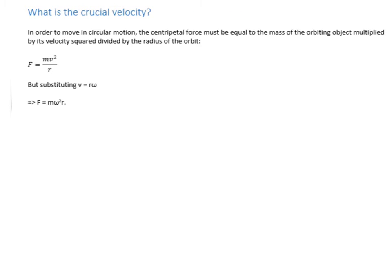The required speed is calculated using the centripetal force equation. The centripetal force F equals mass m times velocity v squared divided by the radius r. Using the substitution v equals r times omega, this becomes F equals m times omega squared times r. Either form of the equation can be used depending on the information given in a question.